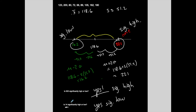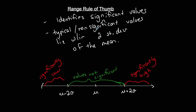Anytime you hear usual, unusual, significantly high, or significantly low, you're using the range rule of thumb. You want to determine two standard deviations above the mean and two below the mean. Anything between those is non-significant; anything lower is significantly low; anything higher than two standard deviations above the mean is significantly high. That's the range rule of thumb.